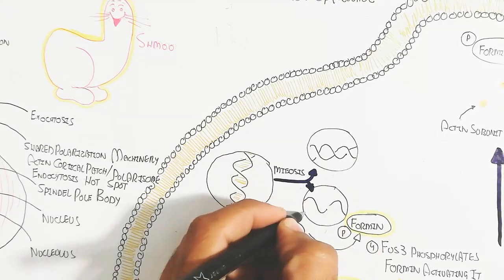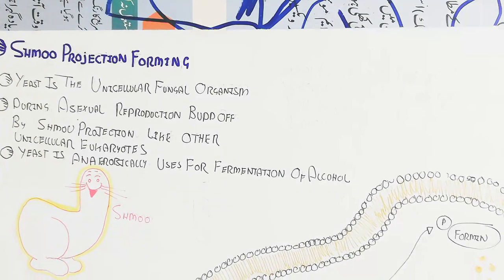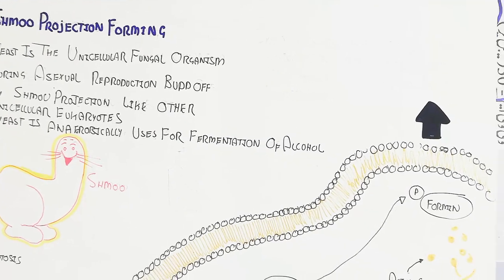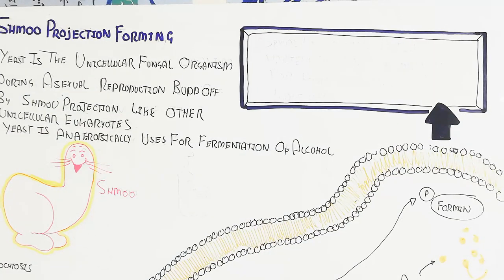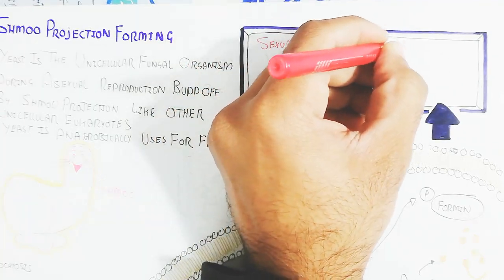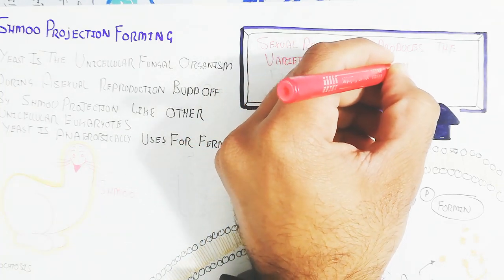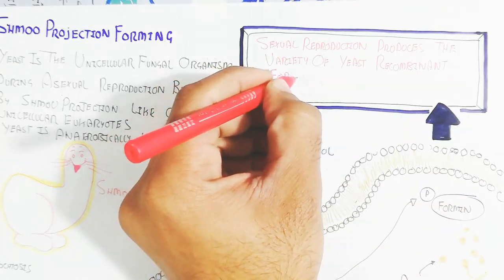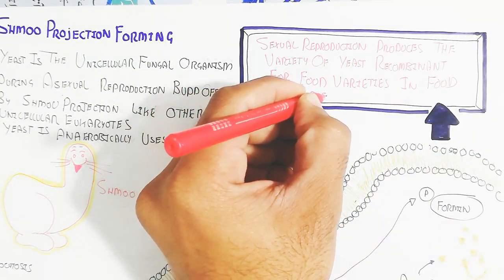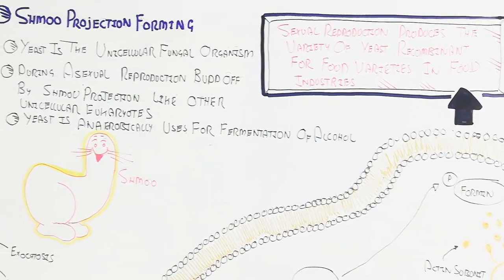The diploid DNA converts into haploid recombinant DNA during meiosis. Formin is used to transfer genes to another individual. Sexual reproduction produces a variety of recombinant yeast strains, important for food industries, alcohol fermentation, and many other food-related products.